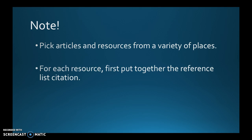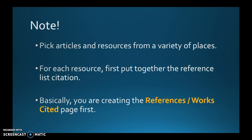For each resource you need to first put together the reference list citation. If it's MLA formatting, you put together the citation in MLA. If it's APA formatting, then you do that one. Most resources you find will actually generate those reference lists for you. Basically, you're creating the references slash works cited page first. In APA style it's called a reference page; in MLA style it is the works cited page — the last page that goes with your paper. You're gathering that information together first.